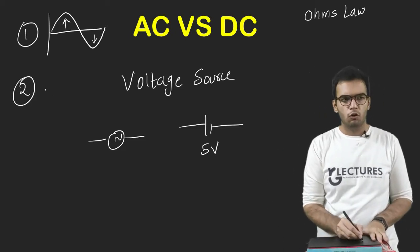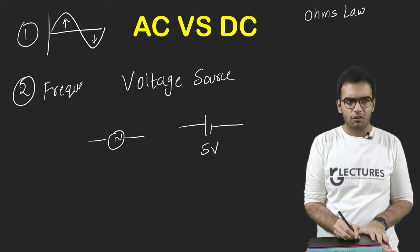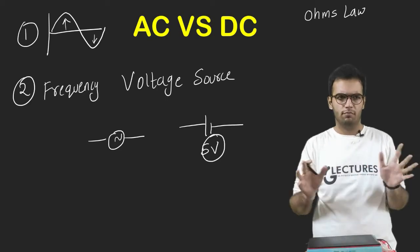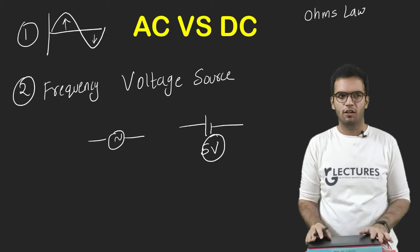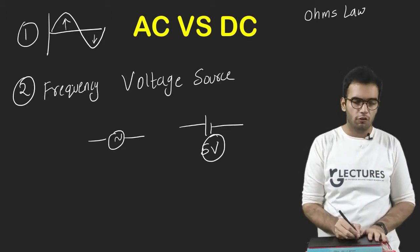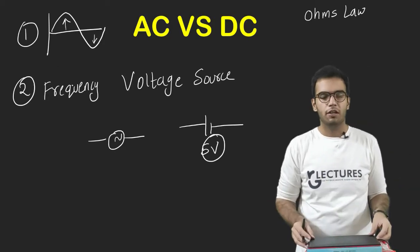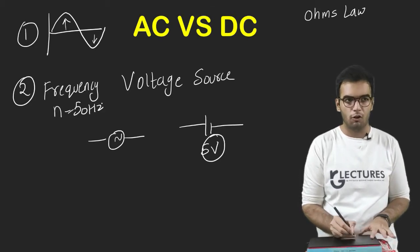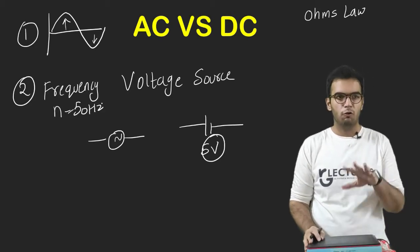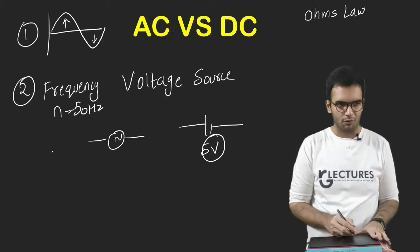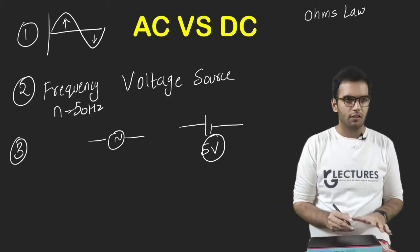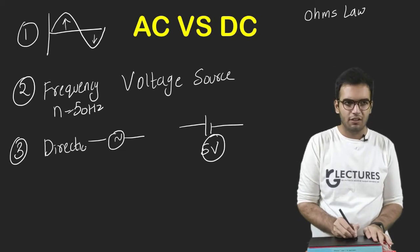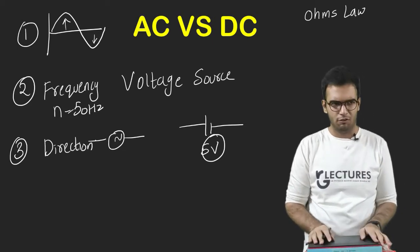The second difference: there was no concept of frequency in DC circuits — the voltage is 5V and that's it. But in AC sources, there is a concept of frequency. For example, frequency in India is 50 Hz — 50 cycles per second of AC voltage. So there was no concept of frequency in DC. Third, things don't have a direction in DC.